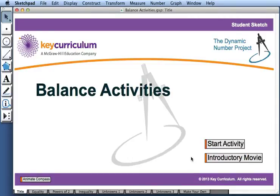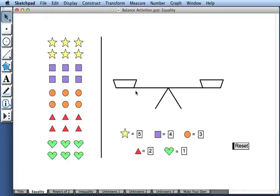This movie describes how to use the collection of six balance activities. Here we have a balance and we have five shapes that we can place onto the balance.